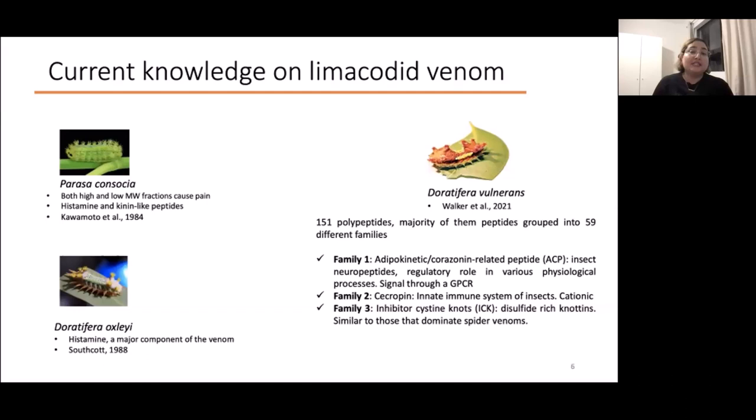Until now we thought that because this is only a defensive venom, it can be simple. But we showed that it's not the case—they can also have a very complex venom composition. But we still don't know if what Doratifera vulnerans has as its venom is something that is going to be common among other caterpillars because the studies on caterpillars have not been done very much.